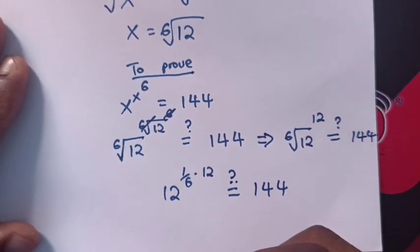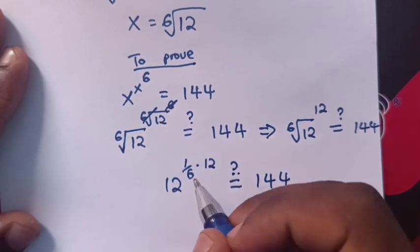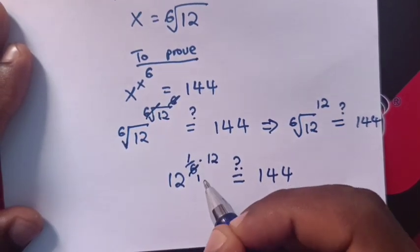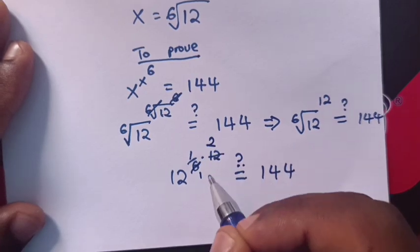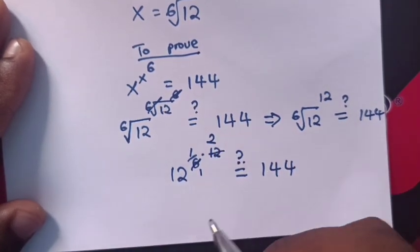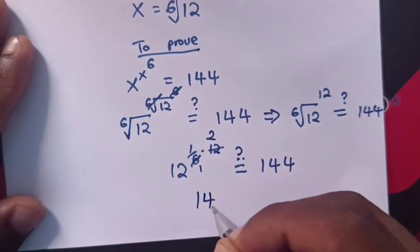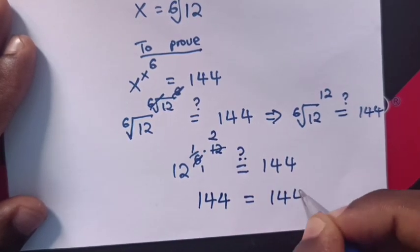Now this 6 will cancel by 1, and here 12 by 2, so it will be 12 power 2. 12 power 2 is 144 which equals 144.